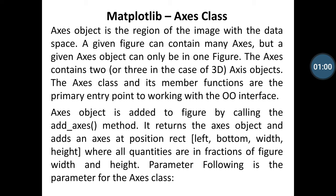Axes object is added to figure by calling the add_axes() method. It returns the Axes object and adds an axes at position rect [left, bottom, width, height] where all quantities are in fractions of figure width and height. Parameter following is the parameter for the Axes class.